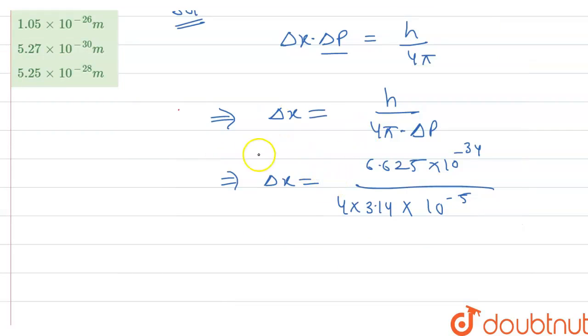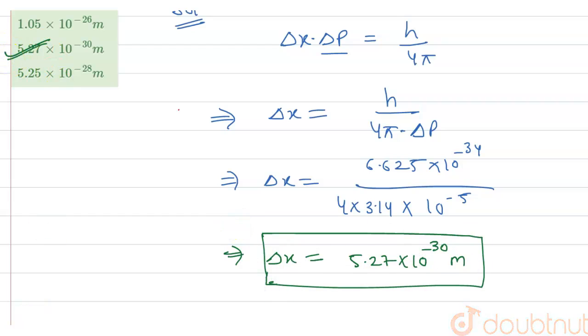So when we solve this equation, we get the value of delta x, that is nothing but uncertainty in position, 5.27 into 10 raised to power minus 30 meter. So this is your required answer, that is in option given is C. Thank you.